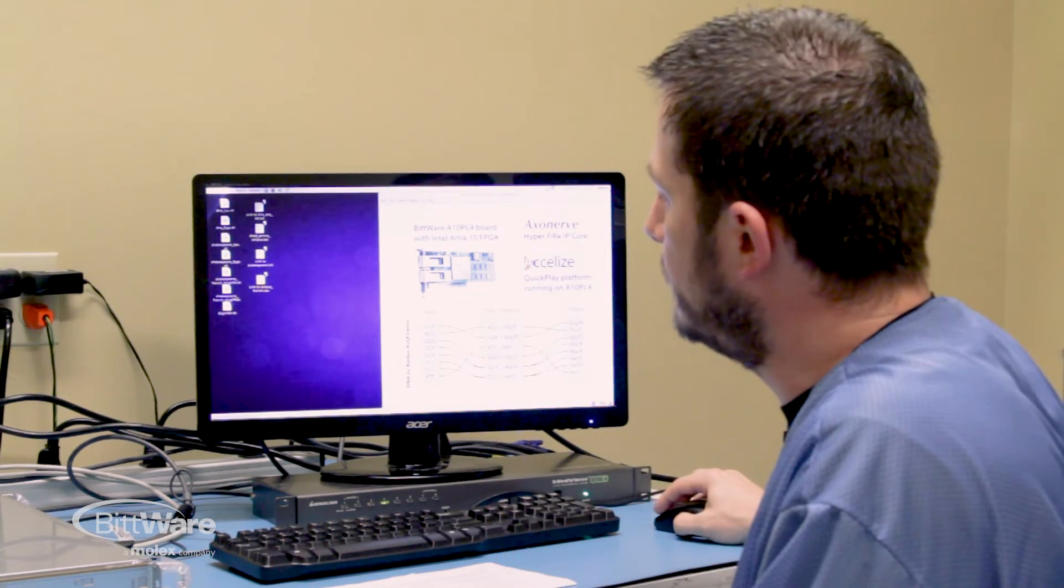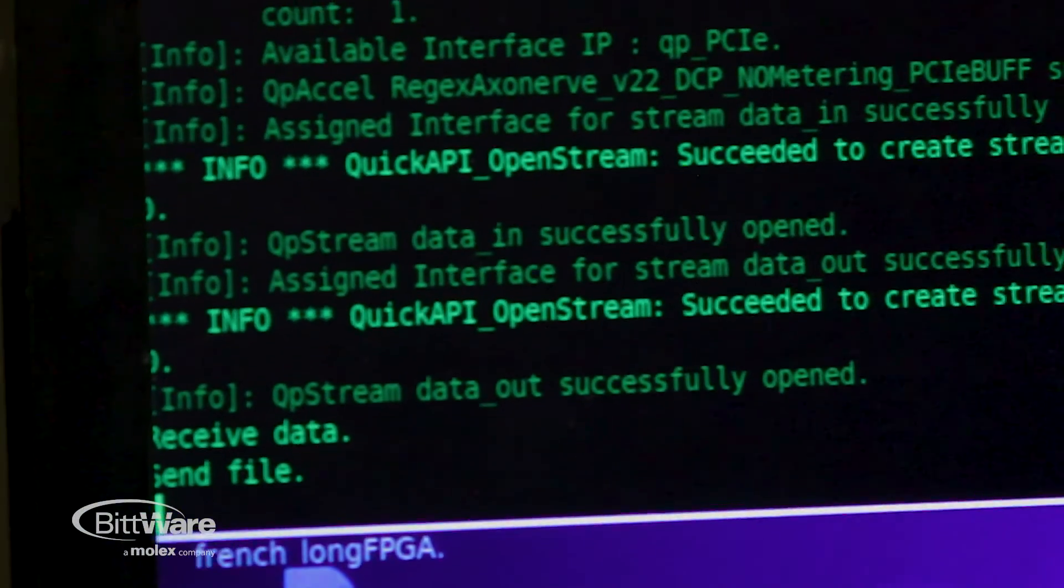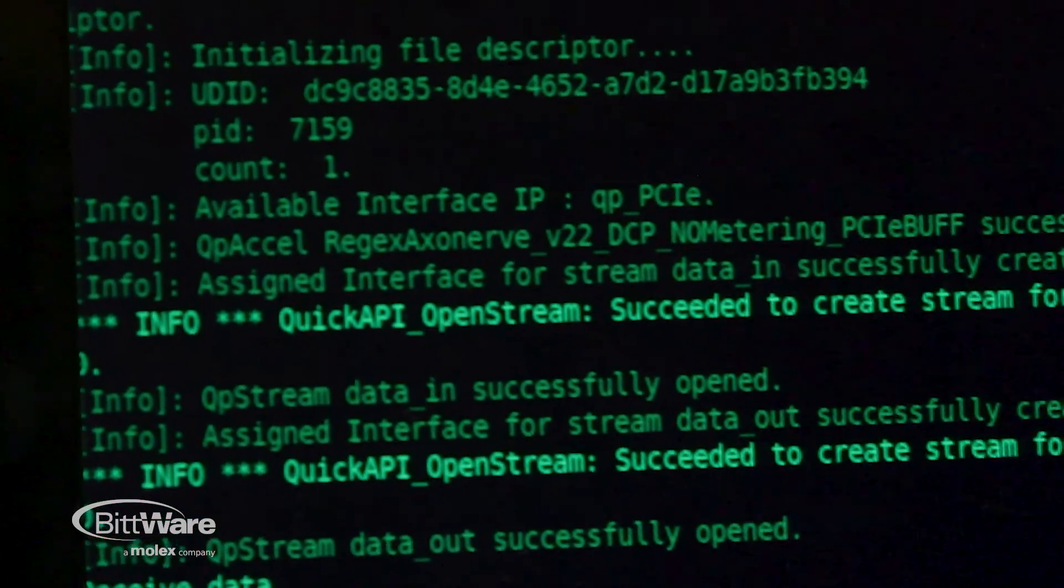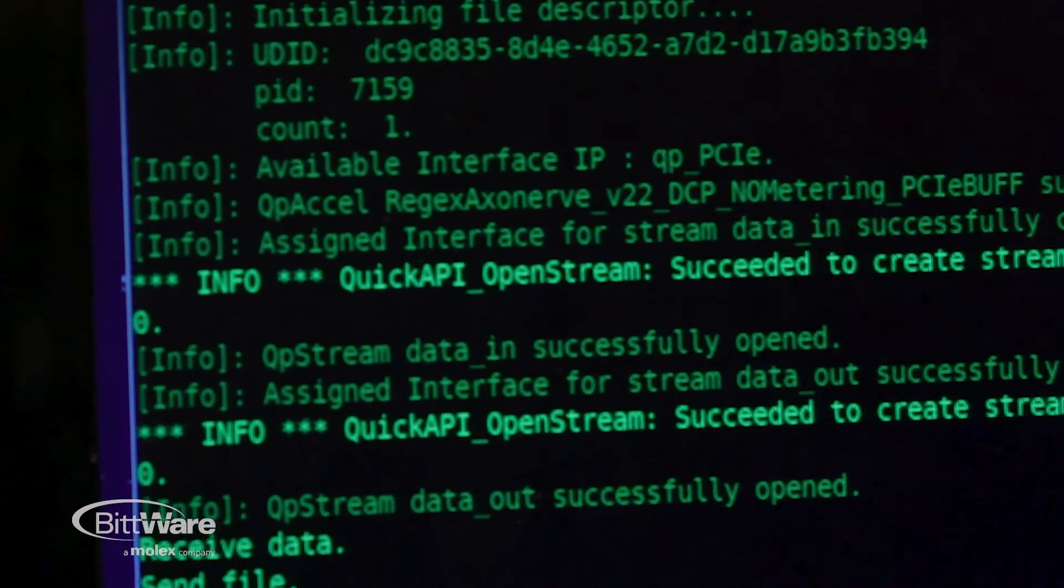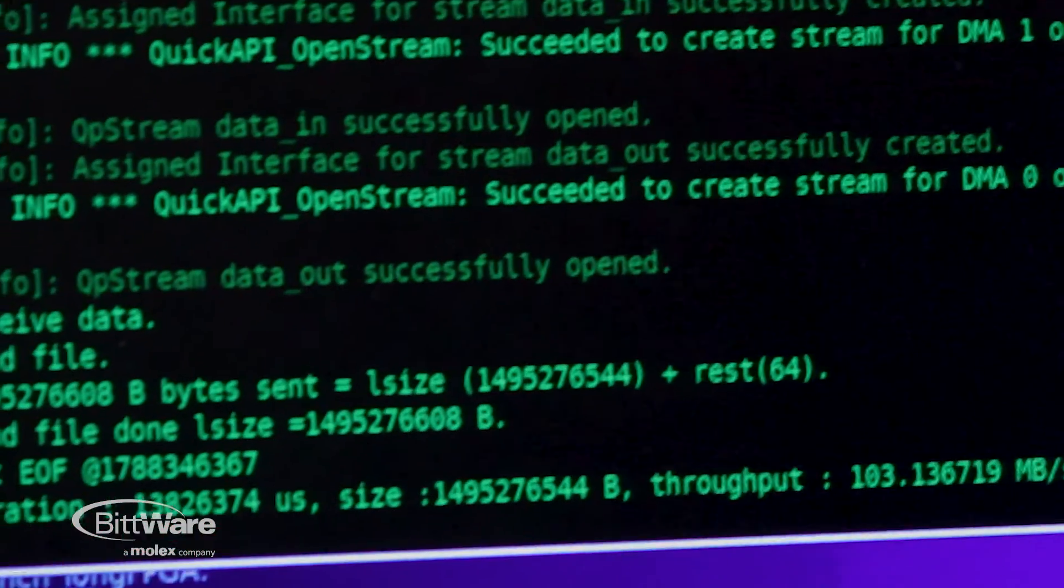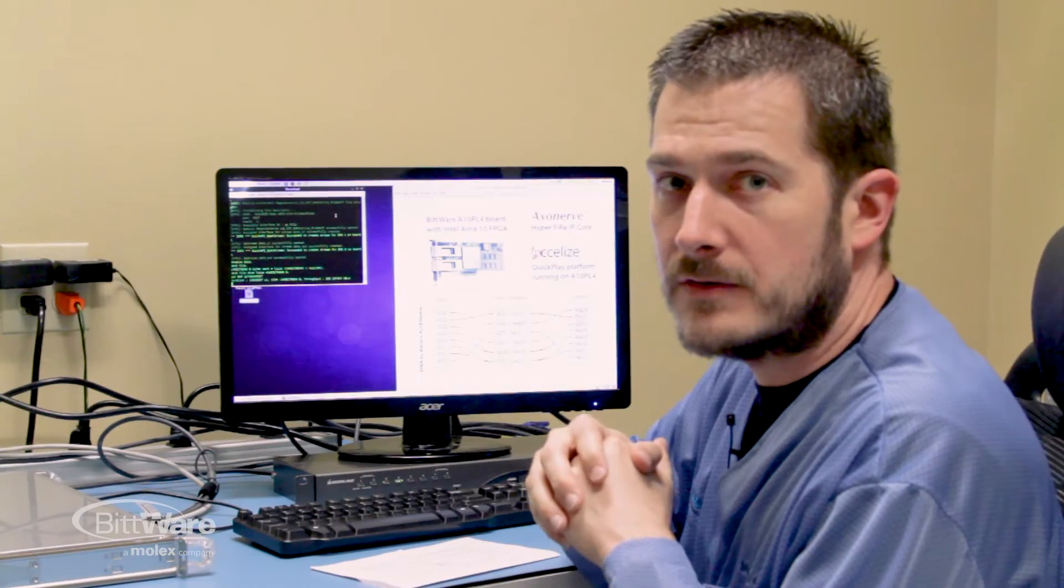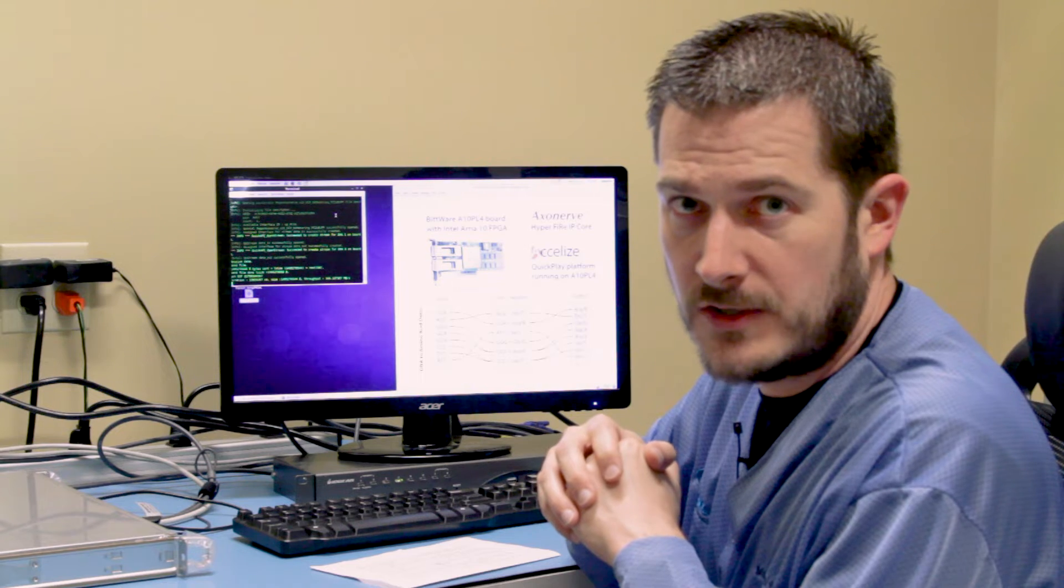So as our input file grows, the FPGA does take longer. But because of the parallelism, it doesn't really matter how many find-and-replace terms you have, from 1 to 2,500 in this case. So now we're done. So the larger file actually took 13.8 seconds on the FPGA.